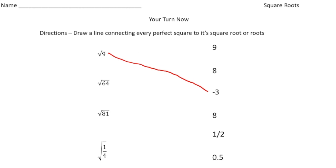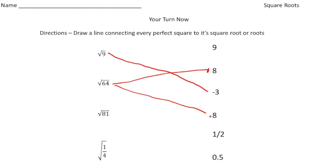The next one is the square root of 64. The square root of 64 is eight and also negative eight — let's draw a line to eight and also to negative eight. The square root of 81 is nine and negative nine.